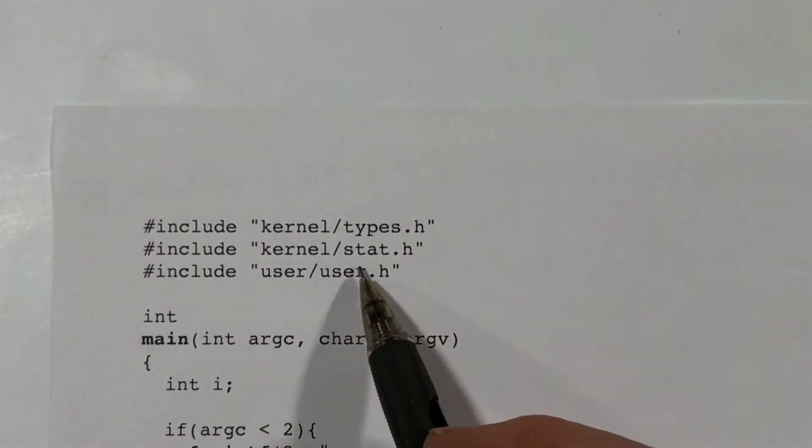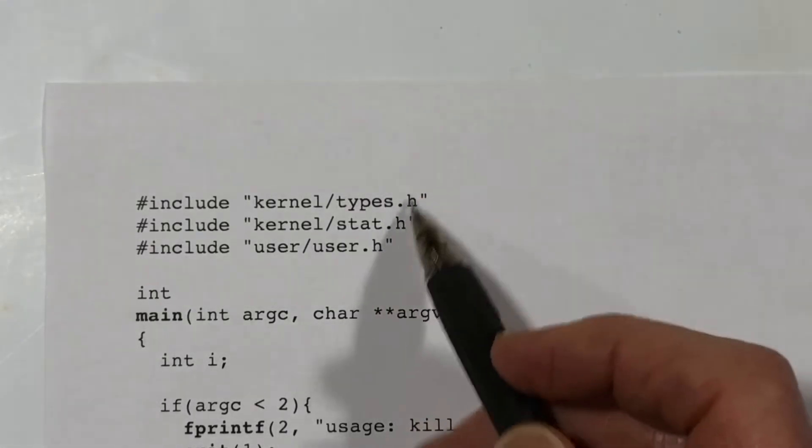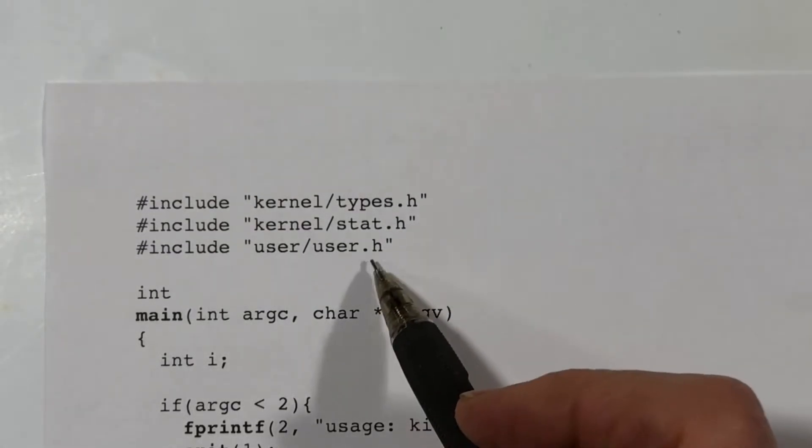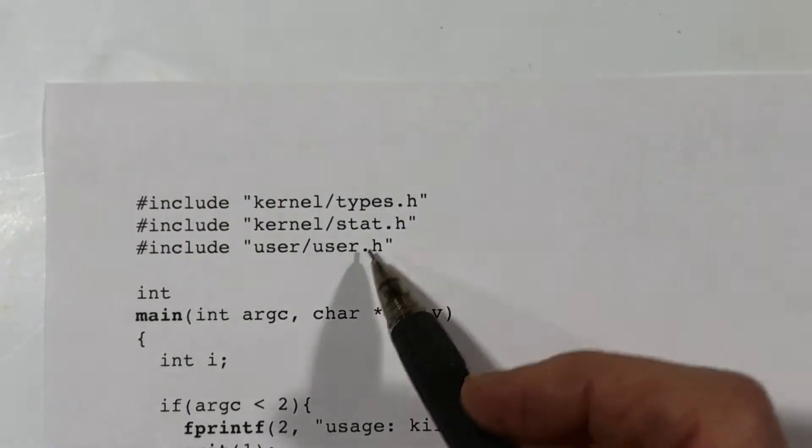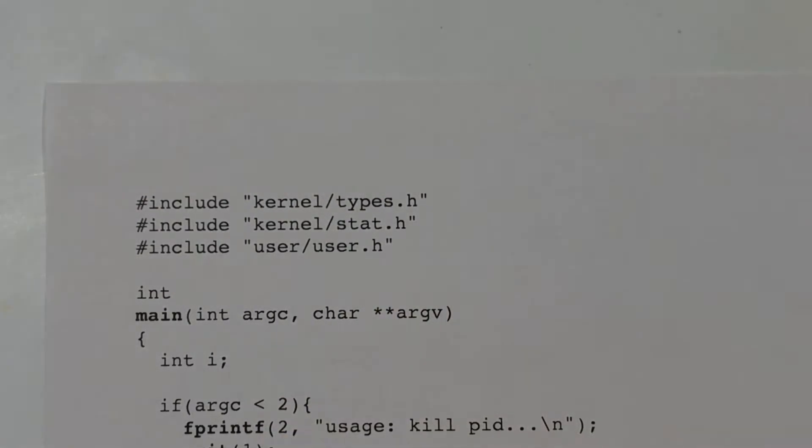This program includes user.h. These two are not so interesting, but user.h is relevant here because it contains the function prototypes for both the library functions and the system calls.